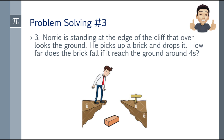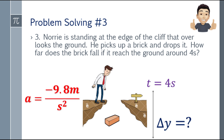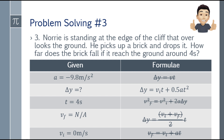Third problem: Nori is standing at the edge of a cliff and drops a brick. How far does the brick fall if it reaches the ground in 4 seconds? Acceleration is negative 9.8 meters per second squared. Time is 4 seconds. We're looking for delta y. Final velocity is not applicable. Initial velocity is 0 meters per second — the keyword is 'drops.'